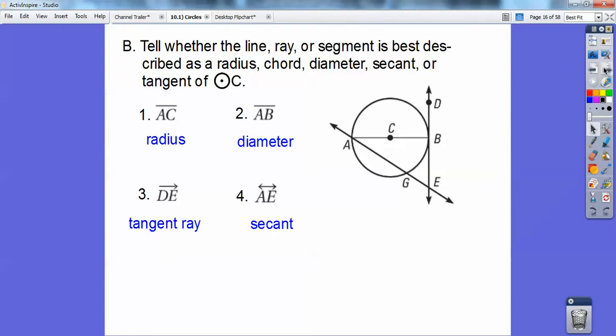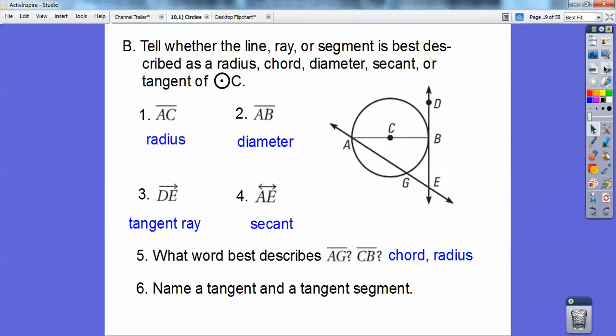I have a couple more that goes with this. What words best describes AG? AG is a chord. How about CB? CB is a radius. And then name a tangent and a tangent segment. So here's a tangent right here. It's the whole line, so you can describe this whole line in several ways. Line DB, line DE, line BE, and you can reverse all those letters.